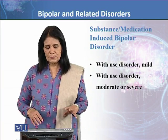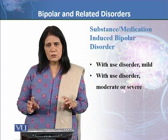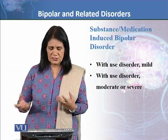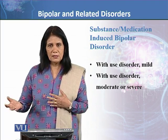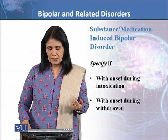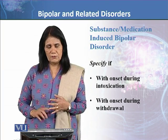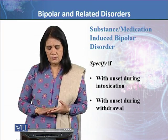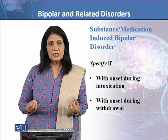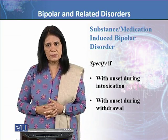You also need to specify the use disorder severity: mild, moderate, or severe. Additionally, you must specify onset — whether it occurred during intoxication or during withdrawal. It is important to determine at what point the bipolar symptoms first manifested in relation to substance use.